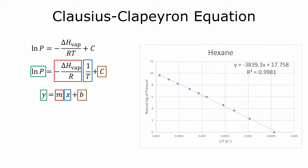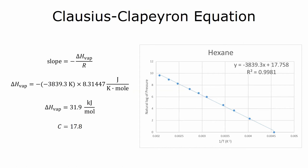Well, if you graph natural log of vapor pressure versus inverse temperature in Kelvin, we get a nice straight line. And you can use this information to calculate the vapor pressure of some unknown liquid, and determine its constant C.